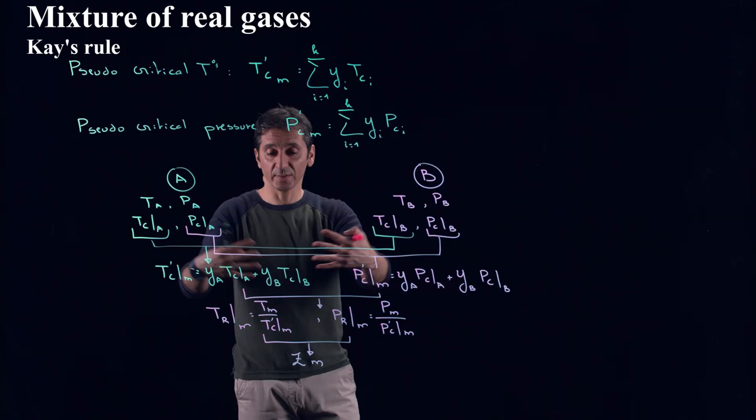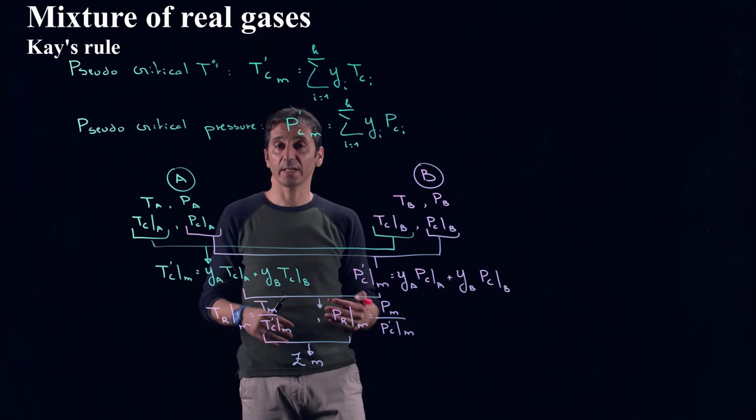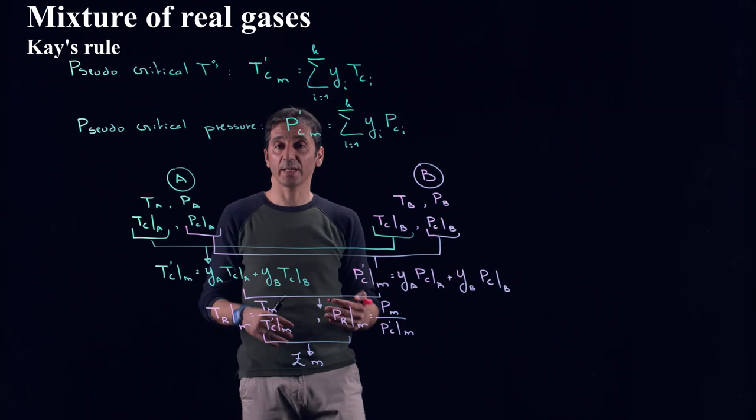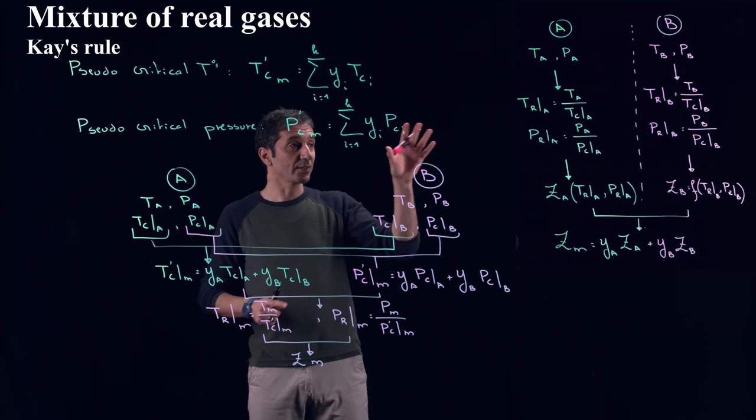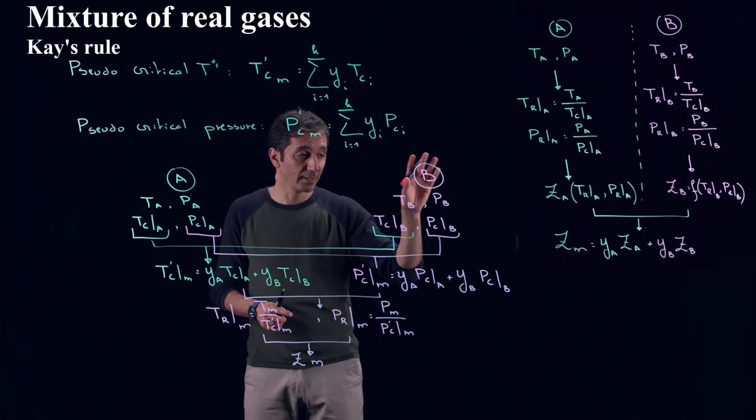The first one is that you see that we combine, we consider now the interaction between A and B very early in the process. While in the previous approach what we did, we considered actually the interaction only at the end when we calculated ZM.